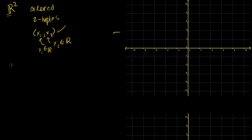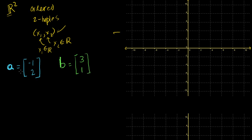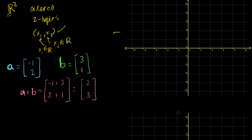Let me define my vector a — I'll make it nice and bold — as equal to negative 1, 2. And my vector b equals 3, 1. Those are my two vectors. Now let's just add them up. Based on my definition of vector addition, a plus b is equal to negative 1 plus 3, and then 2 plus 1. So that is going to be equal to 2, 3.